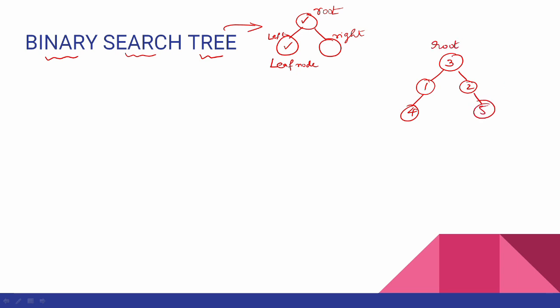This root node has a left child. The right child is 2. If we look at the leaf nodes, the four node is a left node and the five node is also placed. The two node is a left node.